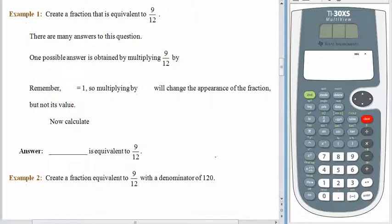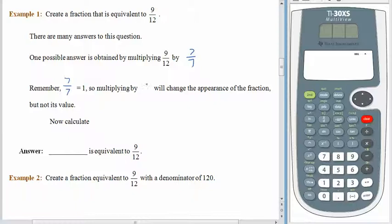Our job here is to create a fraction that is equivalent to nine-twelfths. And there are lots and lots of ways to do this — actually, infinitely many ways. So let's just pick one. Let's try multiplying nine-twelfths by seven over seven. We know that seven over seven is equal to one. And of course, multiplying by one will change the appearance of the fraction but not its value. When you multiply something by one, you just get the thing back — the same amount, but a different appearance.